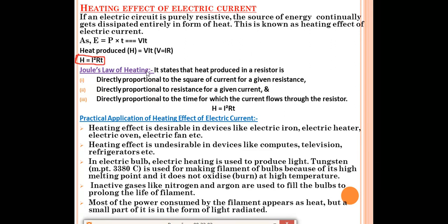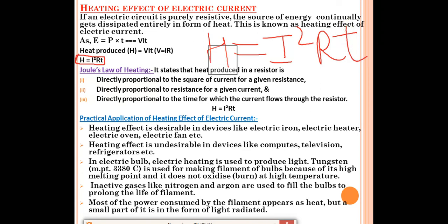Joule's Law of Heating states that heat produced in a resistor (H = I²Rt) is: (1) directly proportional to the square of current, (2) directly proportional to the resistance, and (3) directly proportional to the time for which current flows. Remember these three points for Joule's Law of Heating.